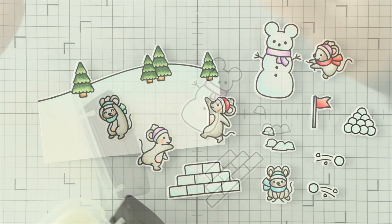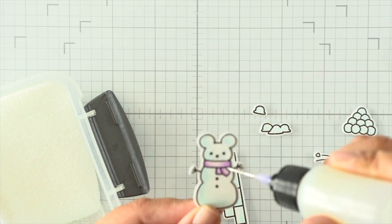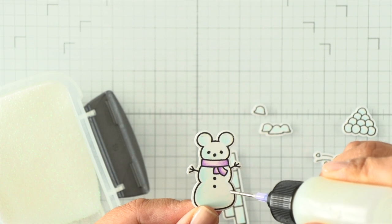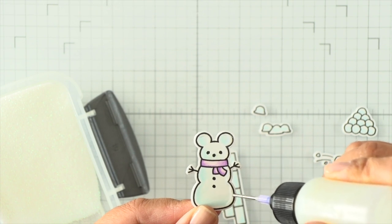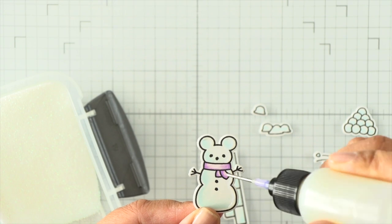After I colored everything I went ahead and die cut it all off camera. I wanted to add some shimmer and shine so I'm using some Prisma glitter with glossy accents as the adhesive. I slowed this down because I want to show you where I'm applying my glue.